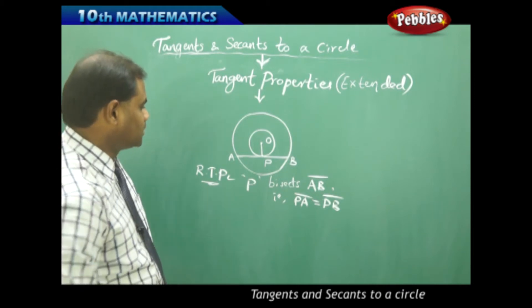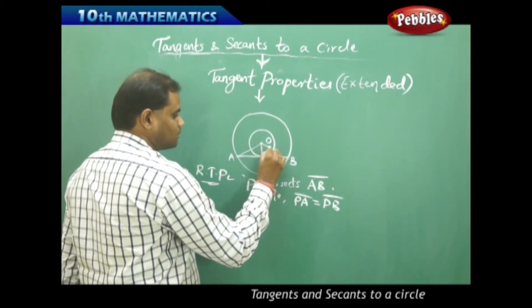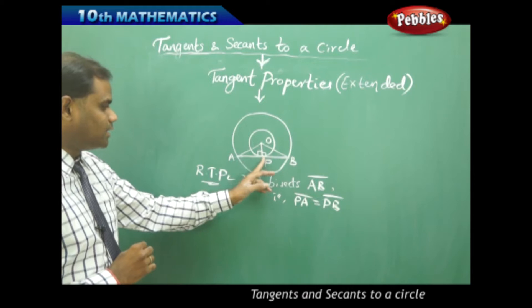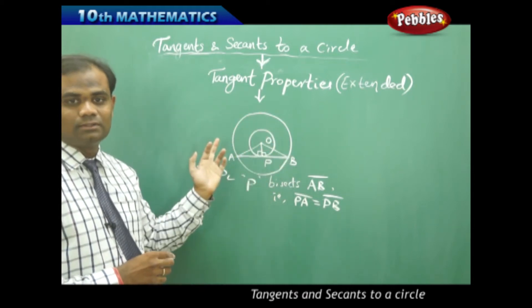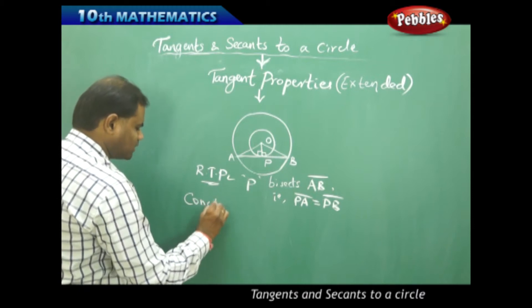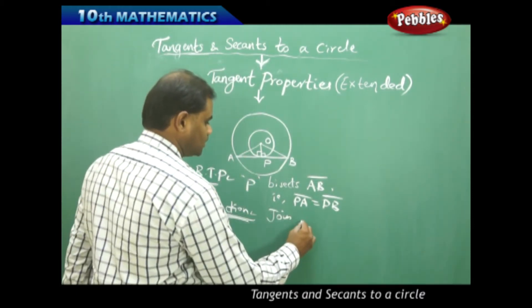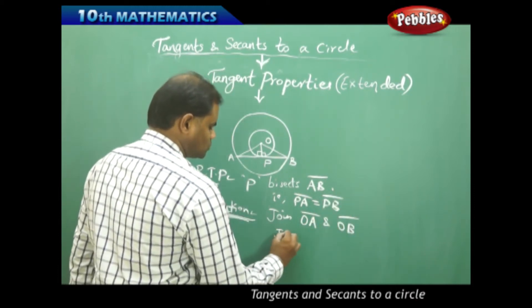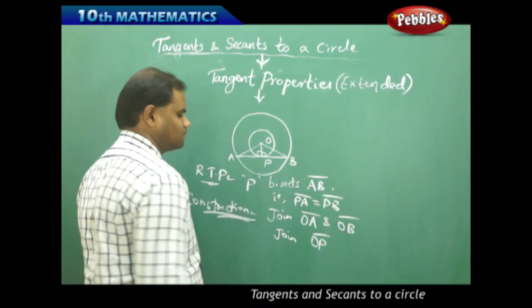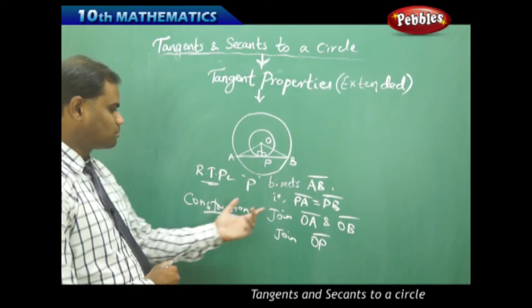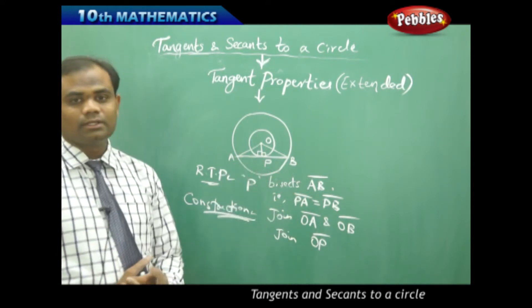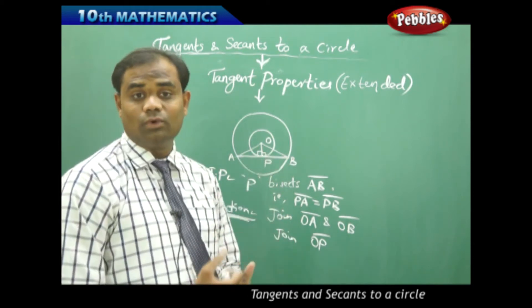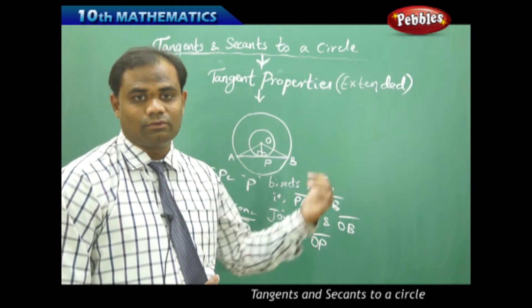For this, let's join OA and OB, so that we get the radius perpendicular to the tangent for the smaller circle. The construction is: join OA, OB, and also join OP. The required result to prove is PA equal to PB, so let's see how we can prove this using the two triangles OAP and OBP.